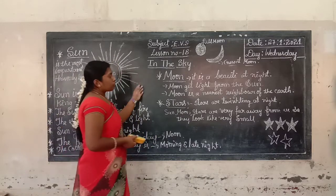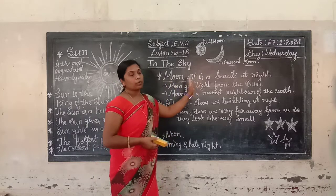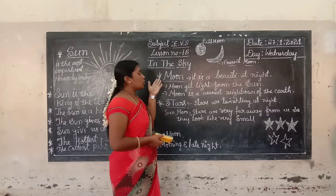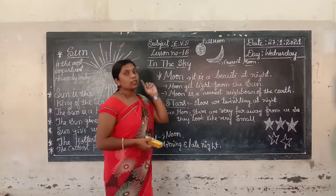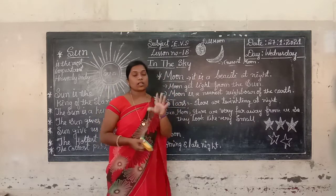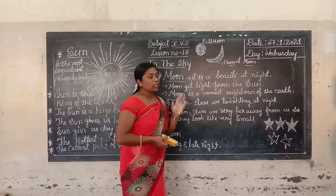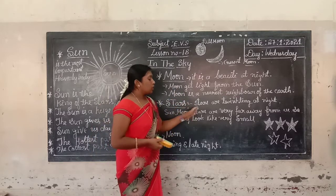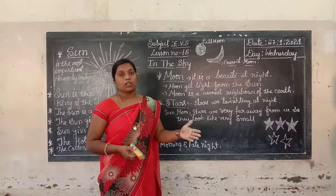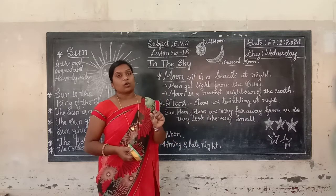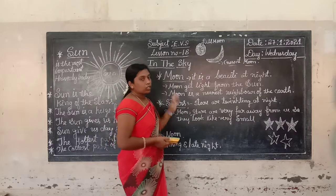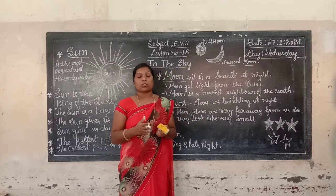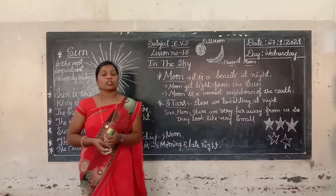So moon is a beauty at night. Moon gets light from the sun — it has no light of its own. The moon is the nearest neighbor of the earth. Stars are twinkling at night. The sun, moon, and stars are very far away from us, that's why they look very small. I hope you enjoyed this information. In the next class we are going to learn about directions. Thank you for watching. Thank you.